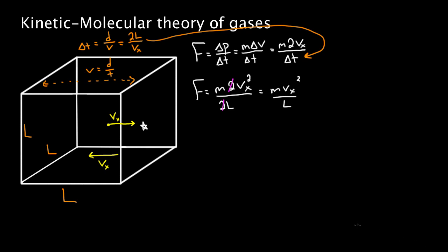This particle doesn't have to be going purely in the x direction — it might have some total velocity where the x component is just part of it. But if I take the x component of each particle's speed, I get the force contribution to the pressure on this wall. This is the force on this wall by one particle, but I want the force from all the particles to get total pressure. Since all molecules have the same mass M and the same box length L, I just need to add up all their x-velocity contributions.